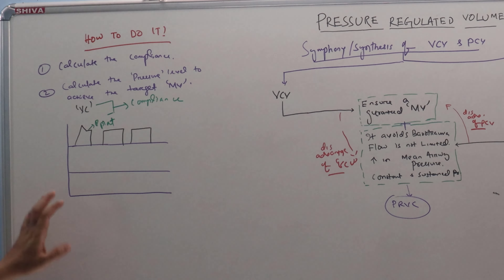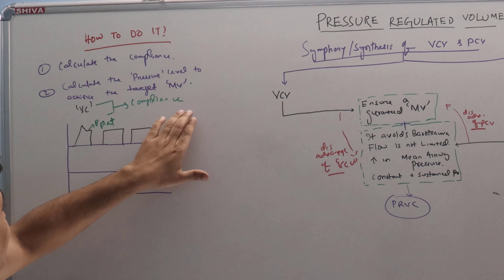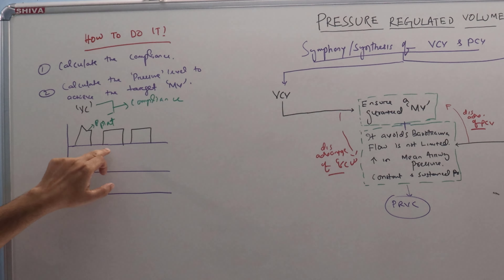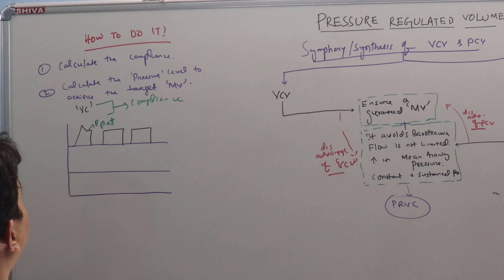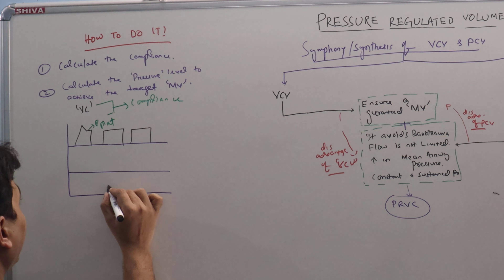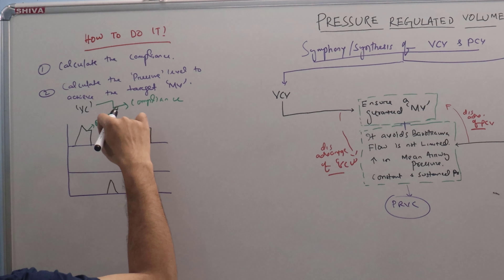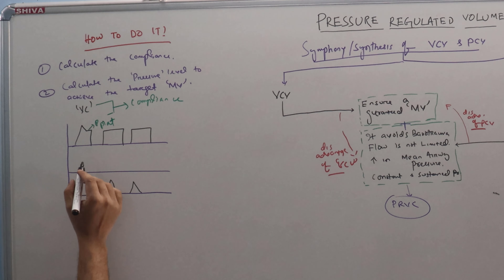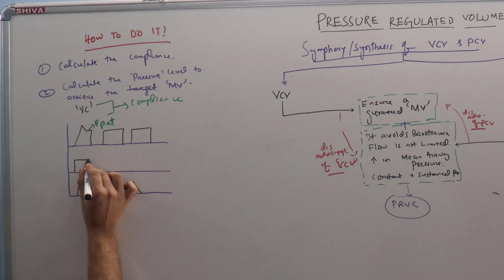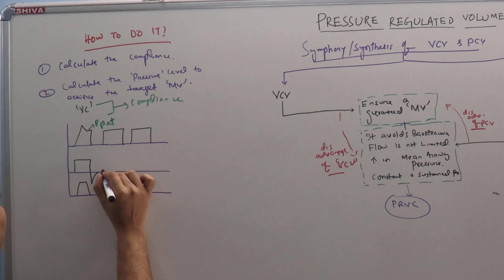The first breath will be a volume control breath, and from this VC breath we will find the P-plateau. Using both these factors we will find out the compliance. Based on this compliance the ventilator will calculate the inspiratory pressure level to achieve our desired ventilation. From the next breath it will be a pressure controlled breath. The ventilator may take 1 to 3 breaths to decide the appropriate compliance of the lung, and based on that the pressure control level will be selected. This pressure control can be high or low depending upon the respiratory system compliance variation from breath to breath, so the tidal volume will also be different.